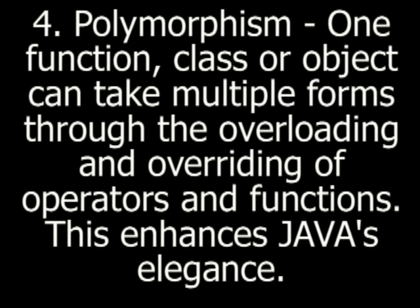Polymorphism — one function, class, or object can take multiple forms through the overloading and overriding of operators and functions, and this enhances Java's elegance. Polymorphism simply means that one function, class, or object in Java can take multiple forms. Instances where you may do this include function overloading, where you create functions with the same name at the same level in your inheritance hierarchy that may take different arguments or parameters, and overriding, where you create functions with the same name at different levels in your inheritance hierarchy that may also take different parameters.